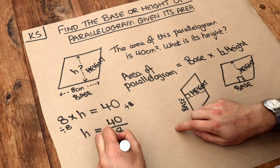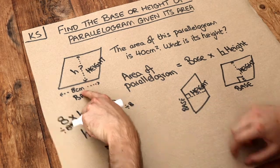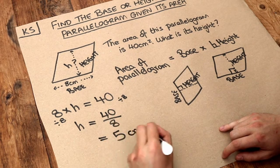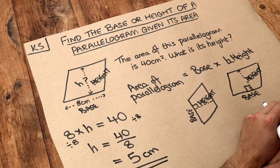And 40 divided by 8 is 5. And let's use the correct unit, well that's in centimeters, and the area is in centimeters squared. So to be consistent, that needs to be in centimeters.